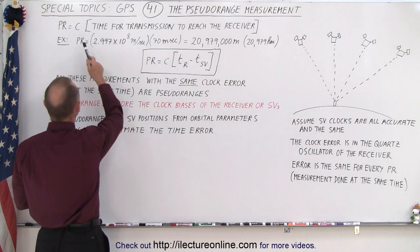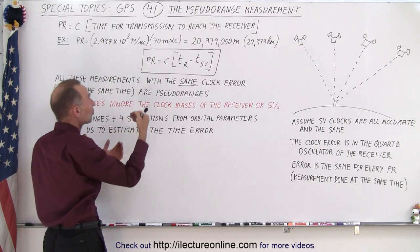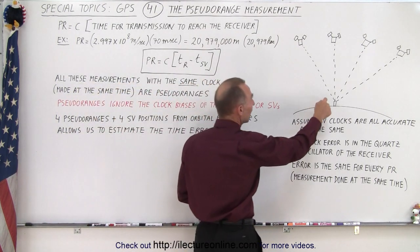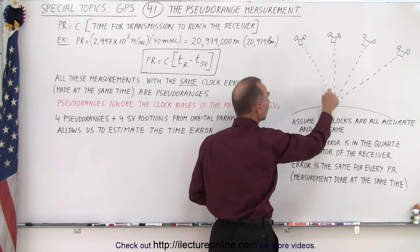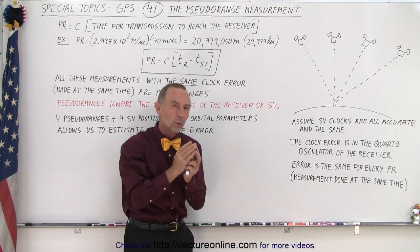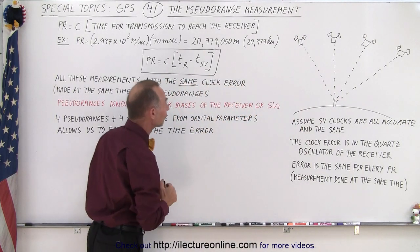And so the definition for the pseudorange is equal to the speed of light times the time for the transmission to reach the receiver from the space vehicle. So take the speed of light times the time that it takes for the signal to go from this satellite to here and this satellite to here and so forth. That will give you the pseudorange of the four satellite to receiver distances.